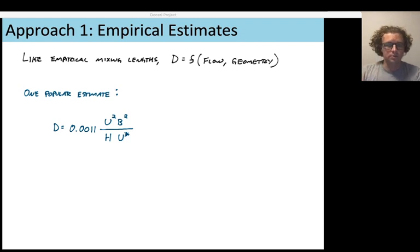So longitudinal dispersion d is equal to 0.0011 multiplied by, so up in the numerator, we've got the velocity squared u squared, the width of the channel squared, or b squared. And down in the denominator, we've got the average depth h, and that's multiplied by this quantity u star, which is the shear velocity.